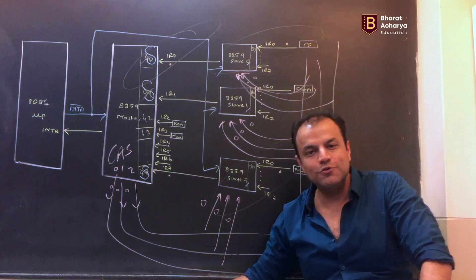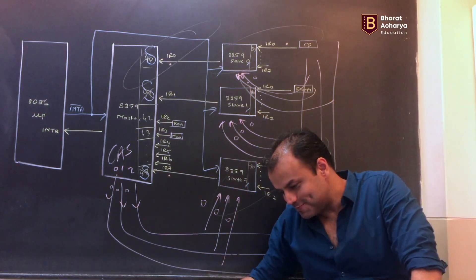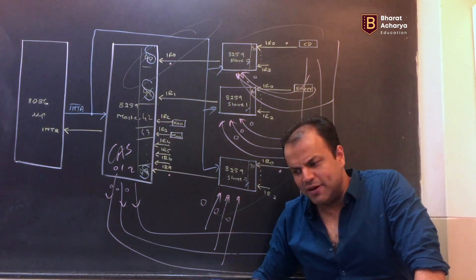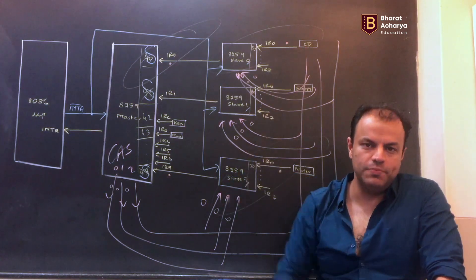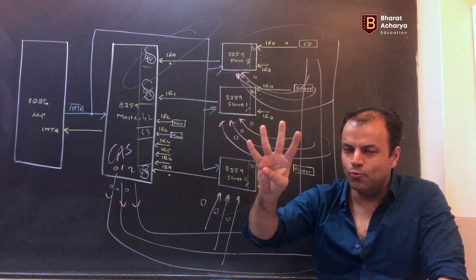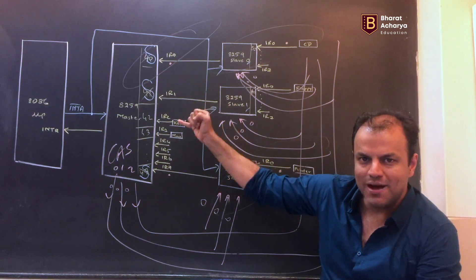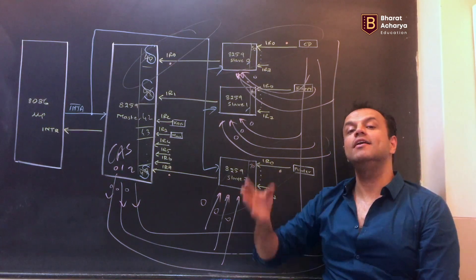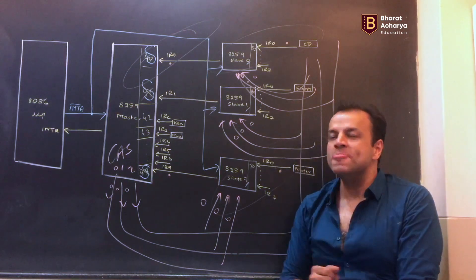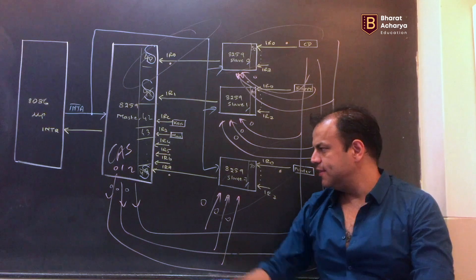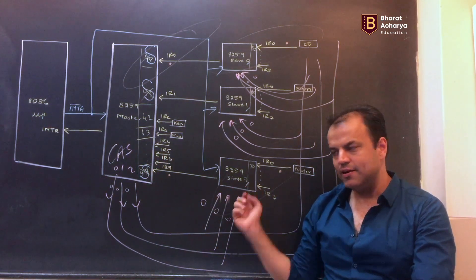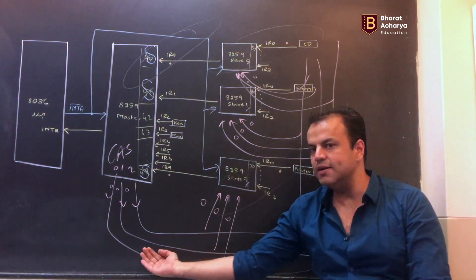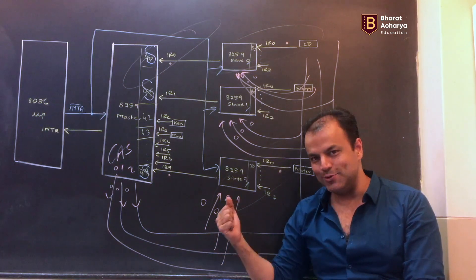Let's answer a few questions. What is the use of cascade lines? Cascade lines are used to identify the slave. How many cascade lines are there? Three - because there are eight possible slaves. When are they used? Between the first and second INTA bar. Why do we need them? So that the correct slave gives the vector number to the CPU. Cascade lines are used by the master to inform the slave that it has been selected, between the first and second INTA bar, so that it can give the vector number to the CPU. What is the direction of cascade lines? They go from the master to the slave - they are unidirectional.